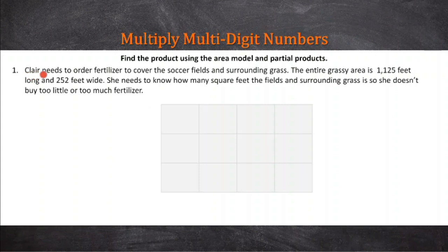Claire needs to order fertilizer to cover the soccer fields, that's a statement. The entire grassy area is telling us we're looking at an area, 1,125 feet long. I'm going to underline that and put L above that for my length, and 252 feet wide. She needs to know how many square feet so she doesn't buy too little or too much fertilizer.